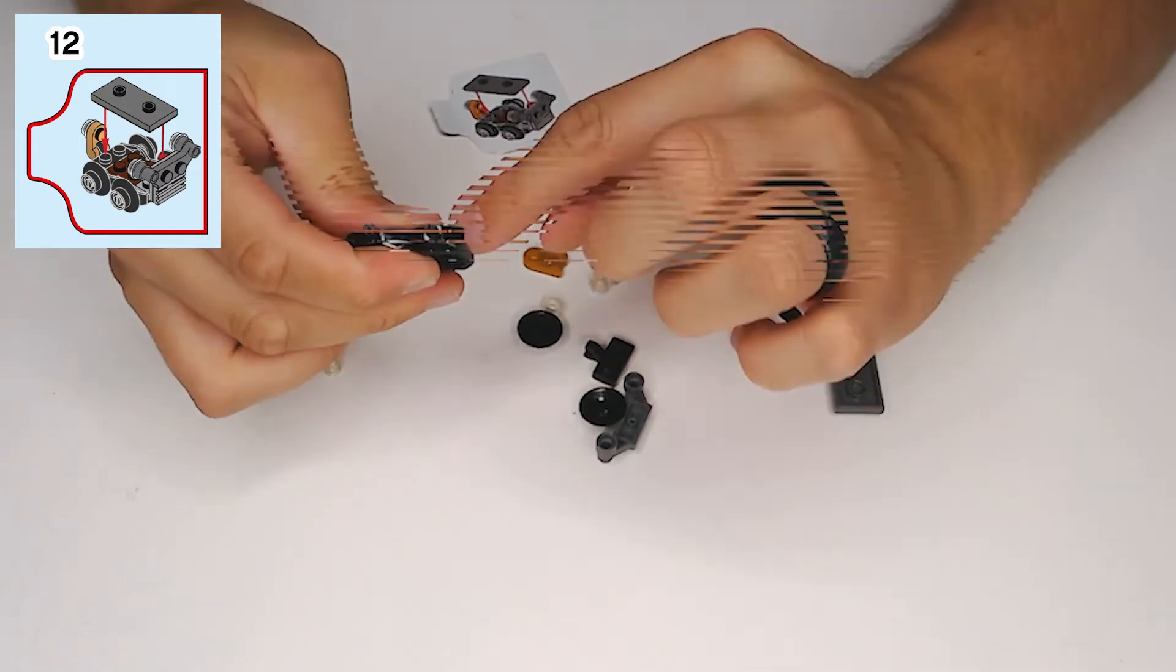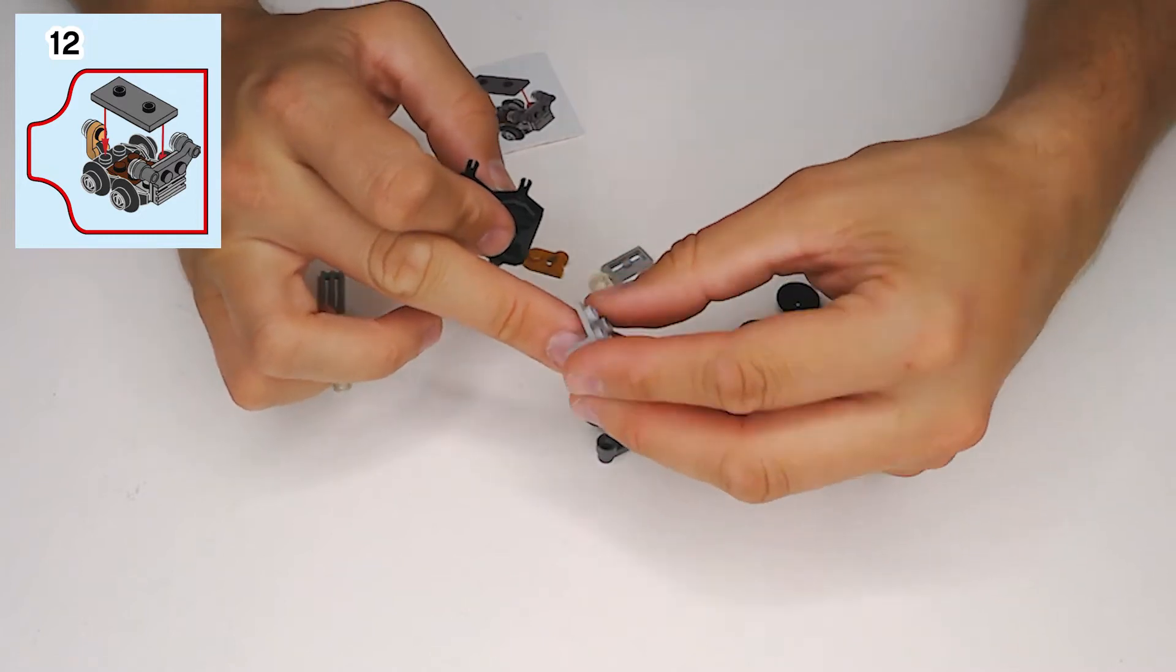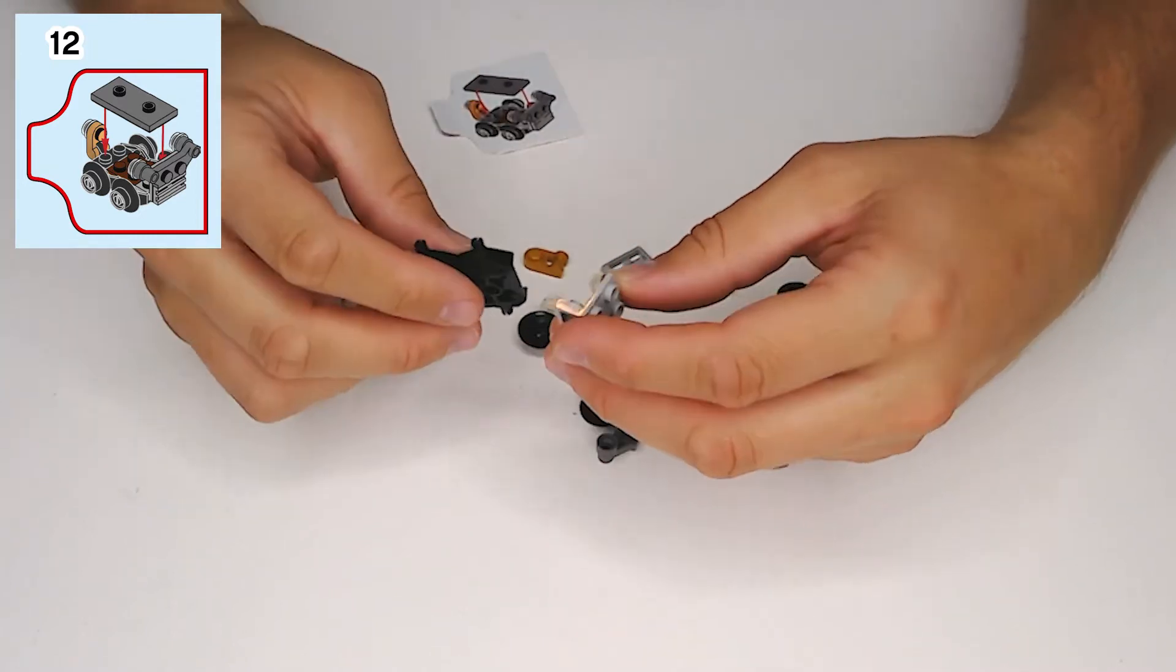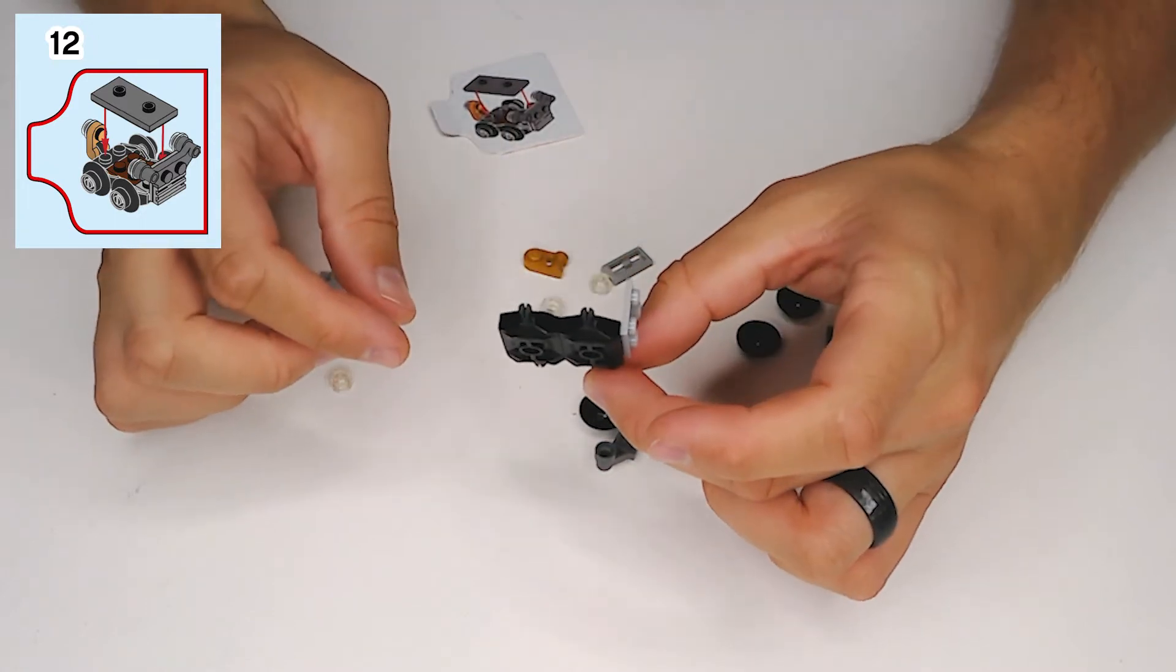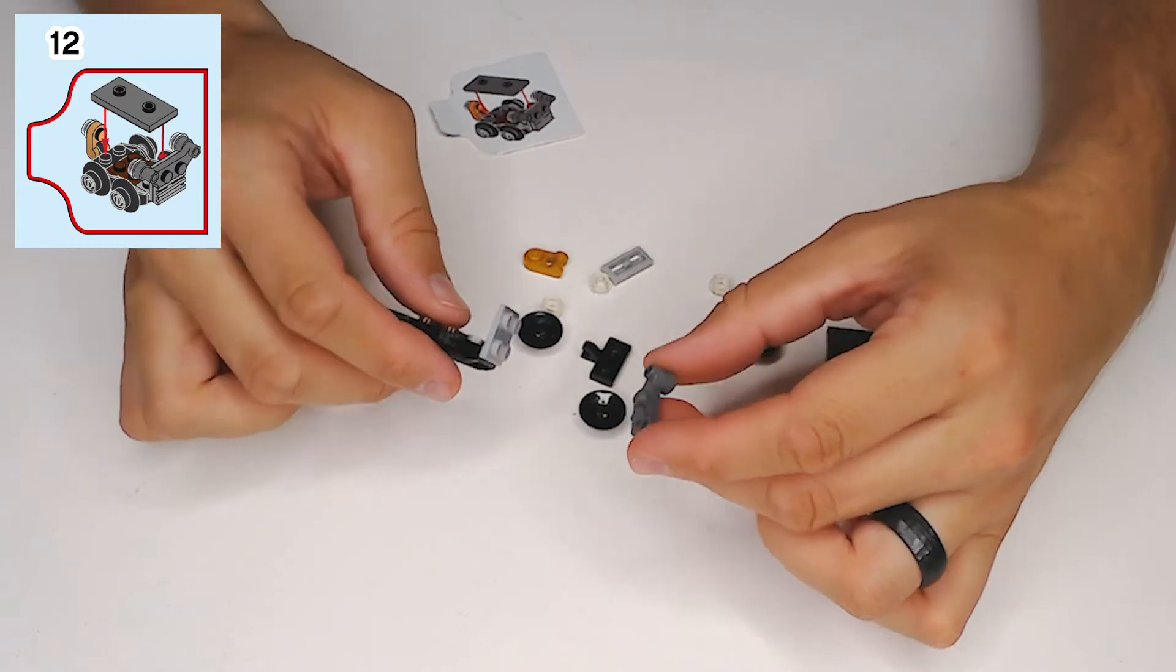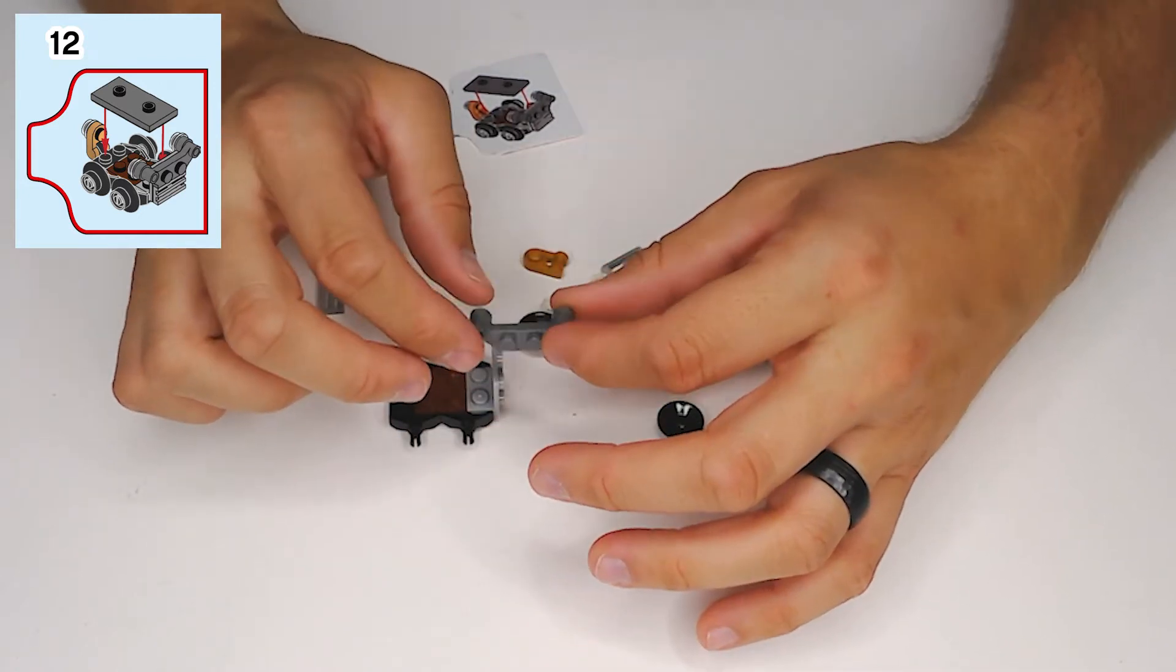And then off of one end of that, we're going to take this gray piece. It's like a 1x2 plate with a 2x2 plate that's side facing upwards off the end. Like that. And then, take this piece. I don't know what these are called.